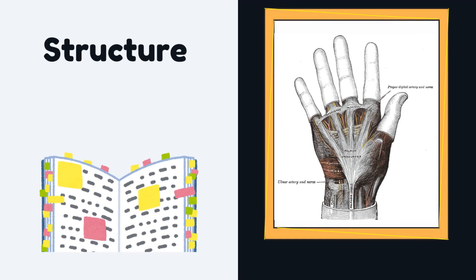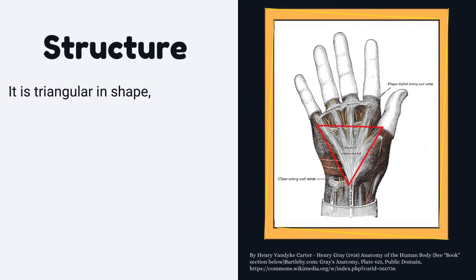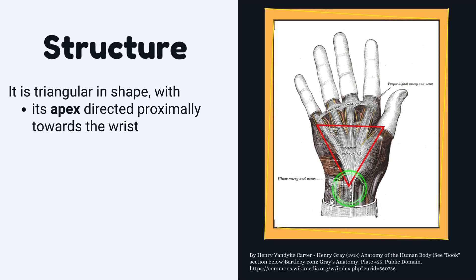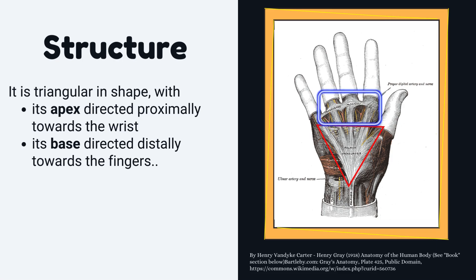The palmar aponeurosis is triangular in shape, with its apex directed proximally towards the wrist, and its base directed distally towards the fingers.